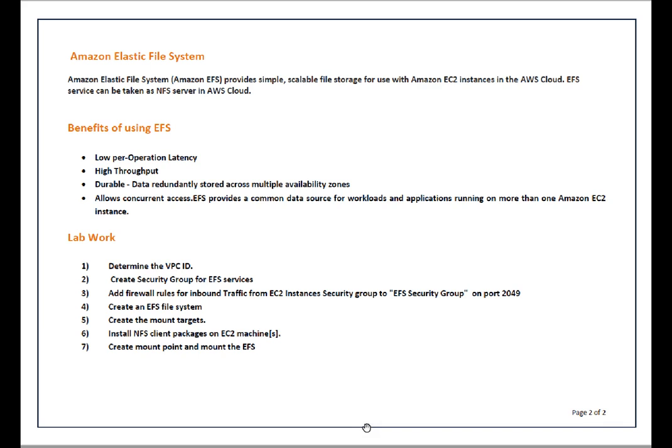Amazon Elastic File System provides simple scalable file storage for use with Amazon EC2 instances in the AWS cloud. EFS service can be considered as an NFS server in AWS cloud. At present the service is available in three regions only: North Virginia, Oregon, and Ireland. EFS uses NFS protocol for communication — NFS version 4.1 in particular.